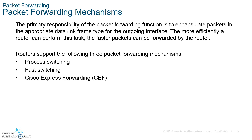The three packet forwarding mechanisms Cisco routers use are: process switching, fast switching, and Cisco Express Forwarding (CEF). CEF builds a Forwarding Information Base (FIB) and an adjacency table. The table entries are not packet-triggered like fast switching, but change-triggered — they update when something changes in the network topology.